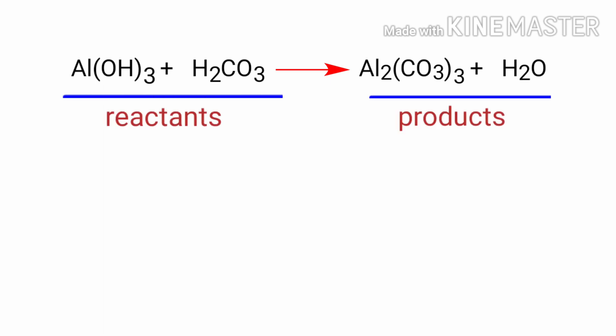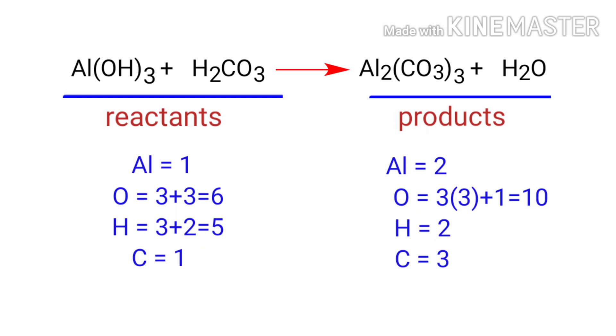In this equation, the reactants are aluminum hydroxide and carbonic acid, and the products are aluminum carbonate and water. If you look at this equation, the equation is not balanced.